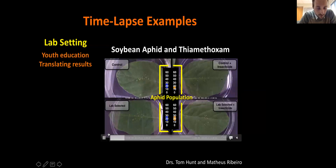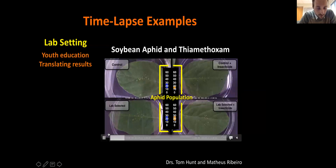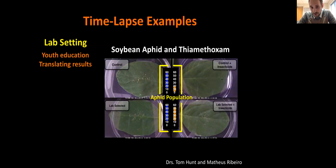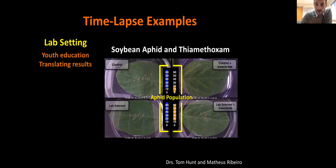Another example is translating results — four videos put together showing thiamethoxam treatment for controlling aphids and aphid resistance. I was working with a graduate student who had resistance ratios, and I asked what that really meant. We decided to put together this time-lapse. You can see control treatments in the top right corner where most aphids have died, but watching the video you can see how erratic their movement is relative to the lab-selected colony on the bottom. The visual aid really helps in translating value. This was presented at the North Central Soybean Research Program as a tool for communicating resistance to growers.